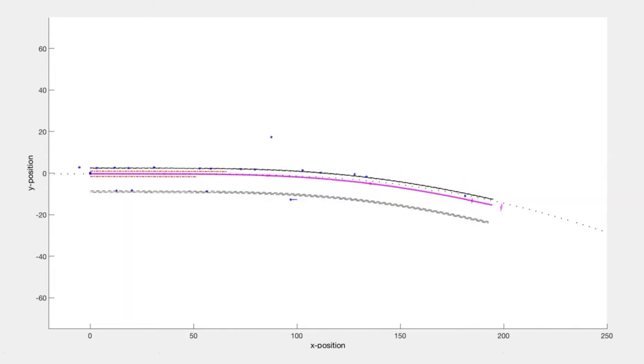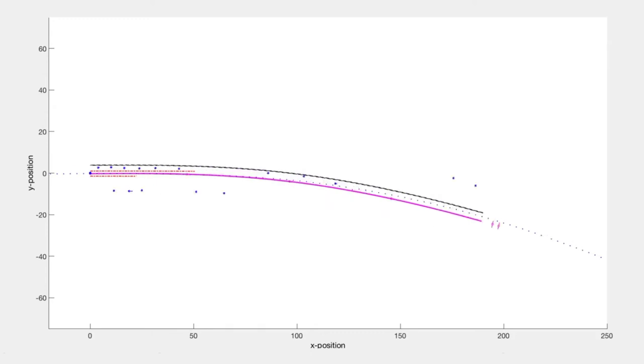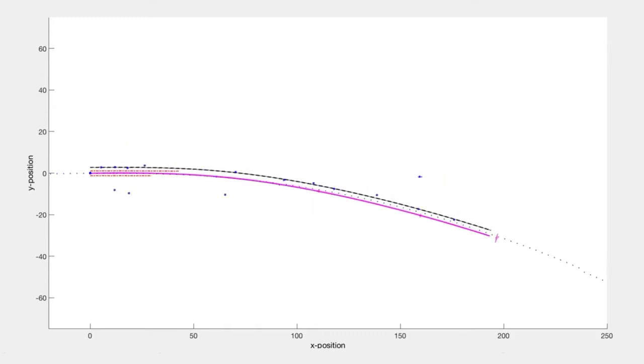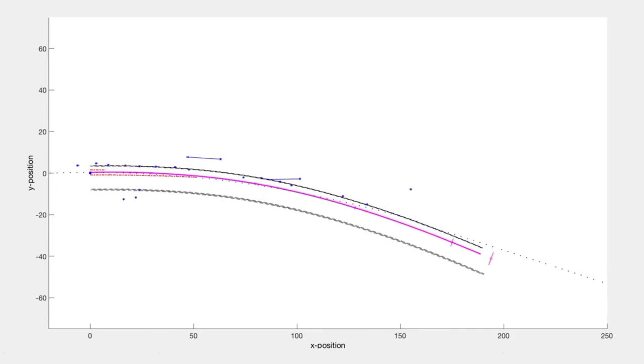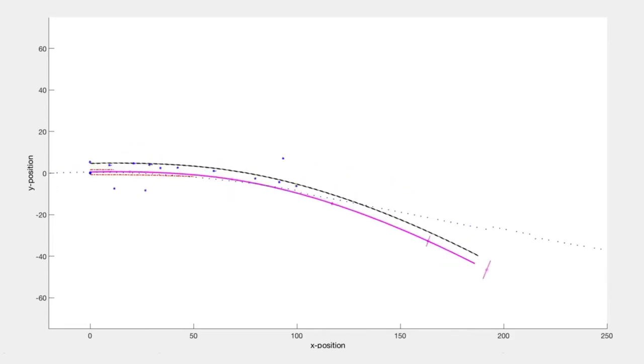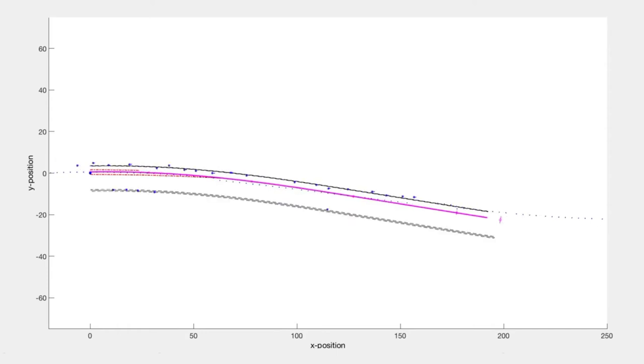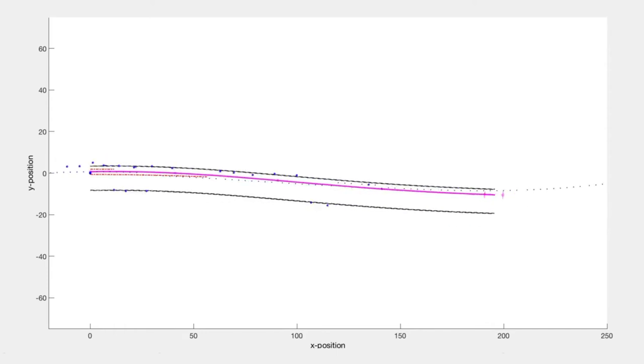What's happening here is that we get limited information about the shape of the road at 200 meters, so we assume that the road is still bending when it's actually starting to straighten out. We should also note that our uncertainty increases here. Once we get new observations telling the filter that the road has straightened out, our filter quickly adapts.